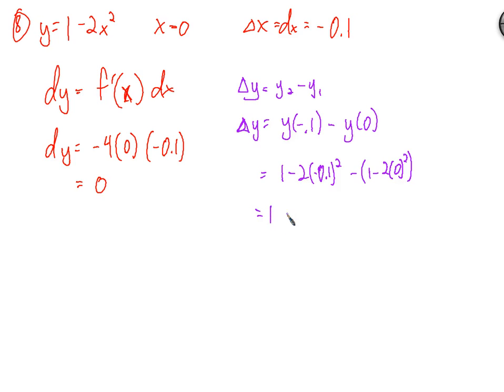So this is 1 minus 2 times 0.01 minus 1 plus 0. We got 1 minus 1, that's 0. So we have negative 0.02 is the actual change in y. So our delta y was negative 0.02, and our dy was 0, which there's not a whole lot of difference between dy and delta y.